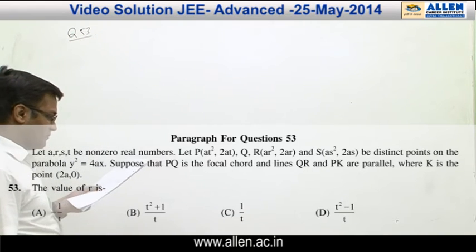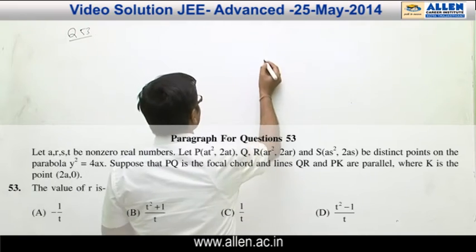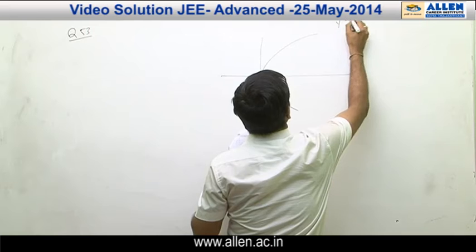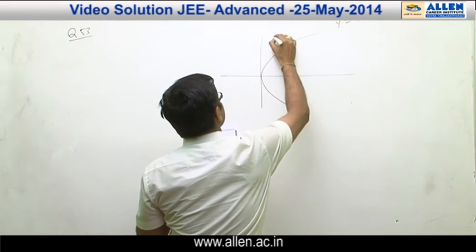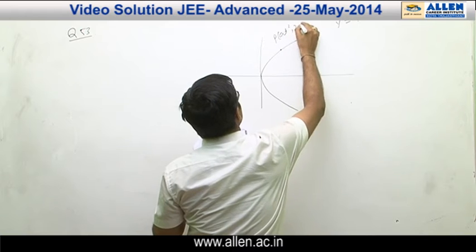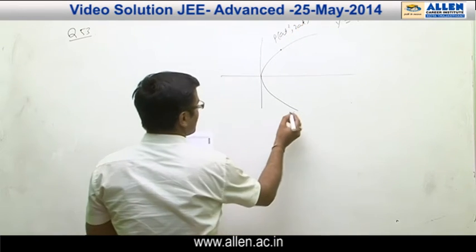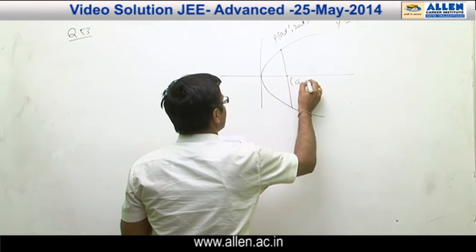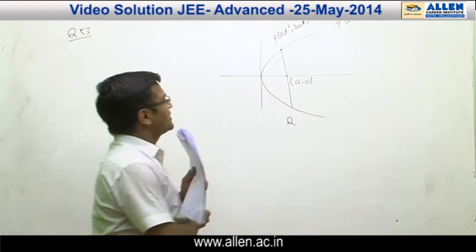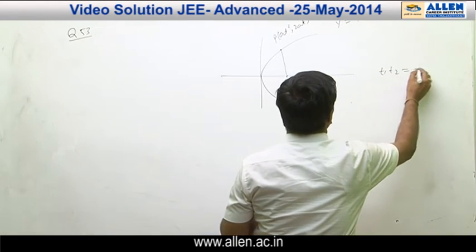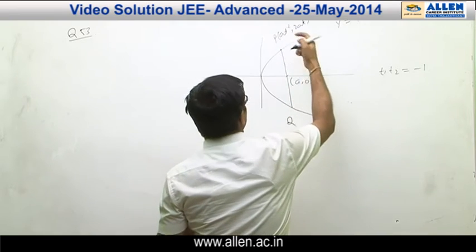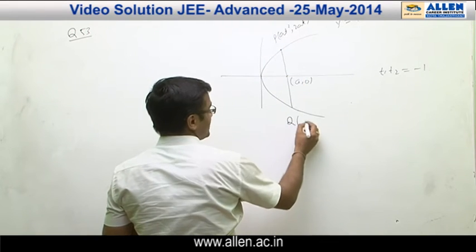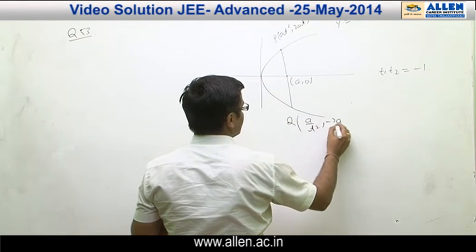We are given that P, Q, R, S are 4 distinct points on the parabola Y² = 4ax. The coordinate of point P is (at², 2at). We are given that PQ is a focal chord of the parabola. The coordinate of the focus is (a, 0). Q is the other extremity of the focal chord. We know that if T1 and T2 are the extremities of a focal chord, then T1·T2 = −1. So the parameter corresponding to point Q is −1/T, and the coordinate of Q is (a/T², −2a/T).